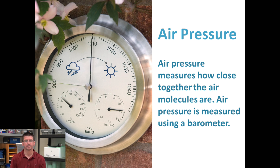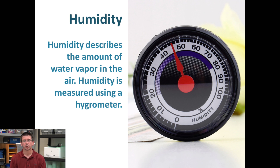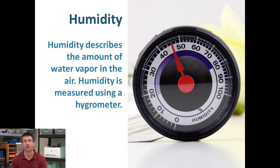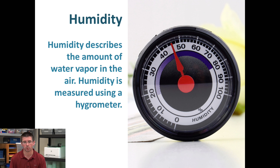Humidity measures the amount of moisture in the air — it's that feeling of how wet or dry the air is. Sometimes you go outside and people say it's very humid, meaning the air feels very wet against your skin; other days it might feel very dry. That's just the amount of water vapor that's actually in the air along with the air molecules. A device called a hygrometer can measure the percentage of humidity in our air at a given time.